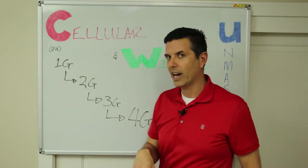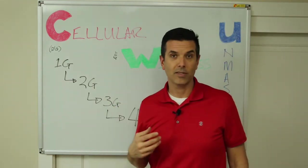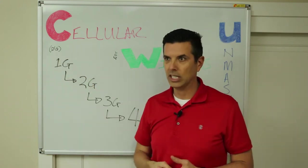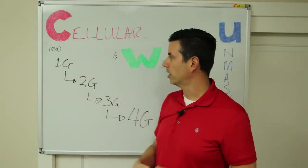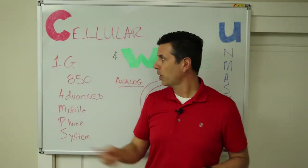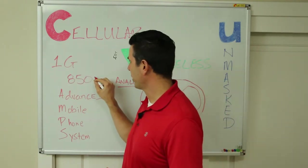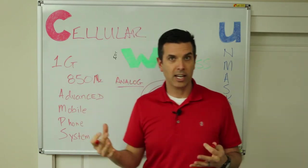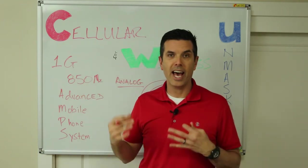I did want to mention there actually was what they consider a zero-gene network before the first commercial 1G networks, which came out around 1979-1980. Zero-G in the early to mid-70s: very crude radio phones, not very effective, very spotty coverage, not very popular. So let's jump into 1G. First generation cell networks were launched primarily in the 850 megahertz band.